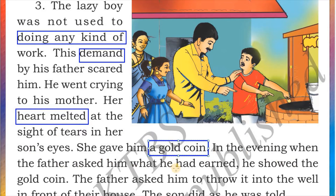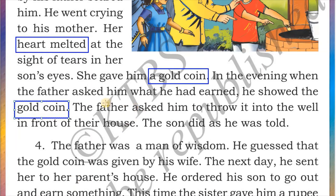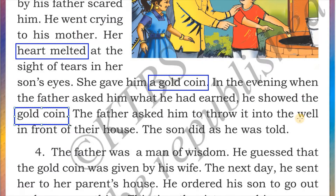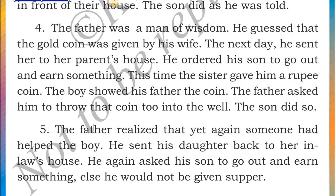In the evening when the father asked what he had earned, the boy showed the gold coin. The father asked him to throw it into the well in front of their house, and the son did as he was told. The father was a man of wisdom — he guessed that the gold coin was given by his wife. The next day he sent her to her parents' house and ordered his son to go out and earn something. This time the sister gave him a rupee coin.